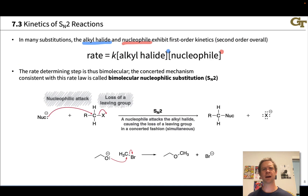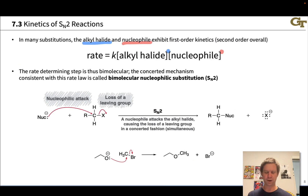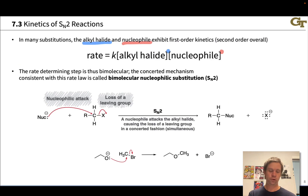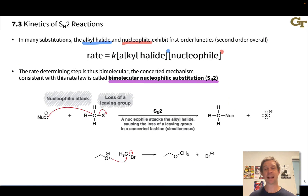This means that in the rate-determining step, both the alkyl halide and the nucleophile are involved. The simplest mechanism we can draw in which this occurs is one in which the nucleophile is forming a bond to carbon at the same time as the carbon-X bond is breaking in the alkyl halide — so nucleophilic attack and loss of a leaving group are occurring at the same time. Because the reaction is bimolecular, two molecules — the nucleophile and alkyl halide — are involved in the rate-determining step.